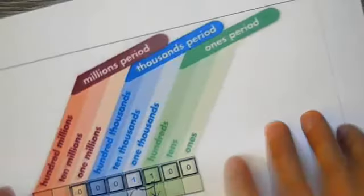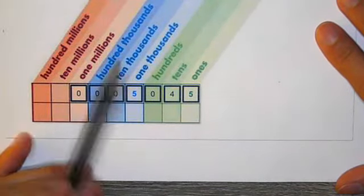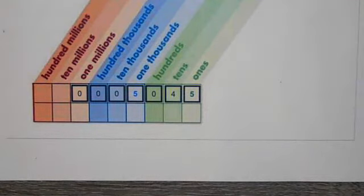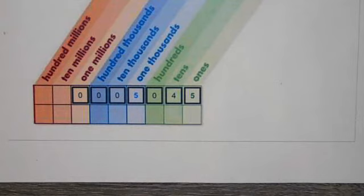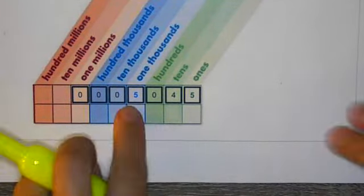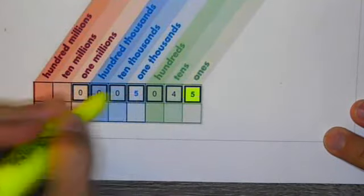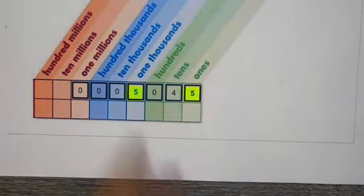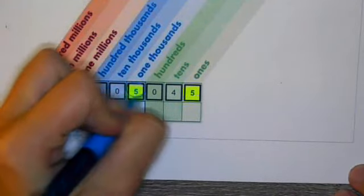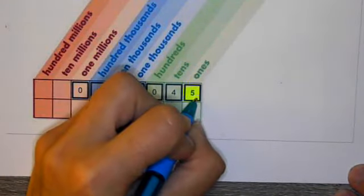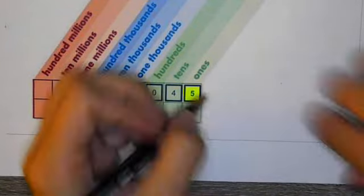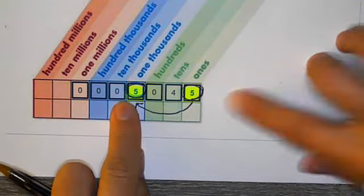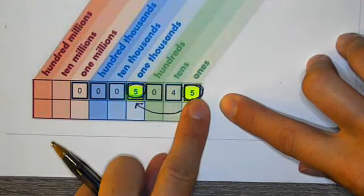Last example. I have this number, which is 5045. And the question I'm being asked is the value of this five right here, and this five, is their relationship 10 times more. So the question is, is the value of the first five, which is this five right here in the 1000s, is this 10 times more than this five right here. So when I go here, and I hop all the way over here, is this one 10 times more than that one?